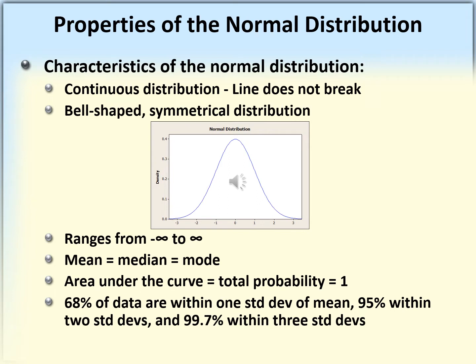The most important characteristic: if we move one standard deviation away from the mean, we find 68 percent of the total area. In other words, between mu minus sigma and mu plus sigma there is 68 percent of the area. If we move two standard deviations away from the mean — between mu minus two sigma and mu plus two sigma — there is approximately 95 percent of the total area.